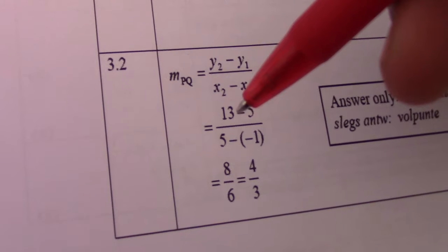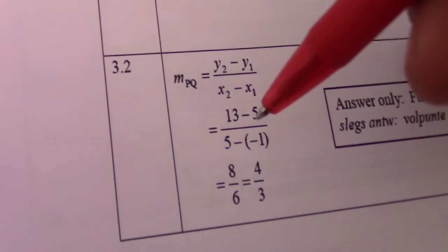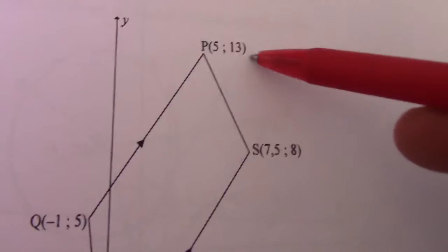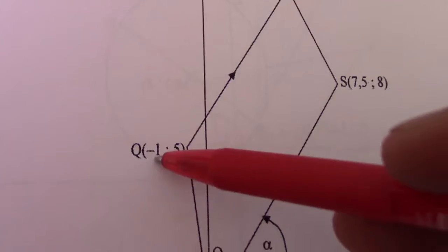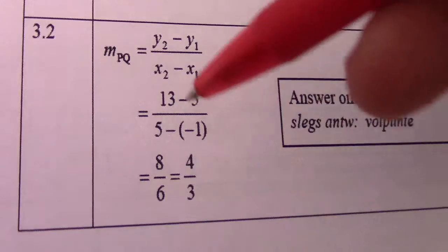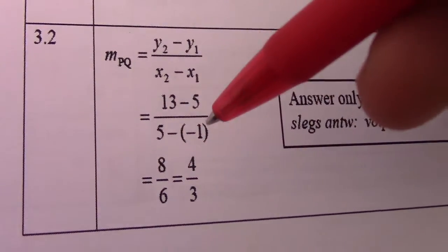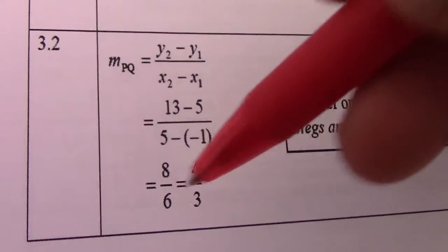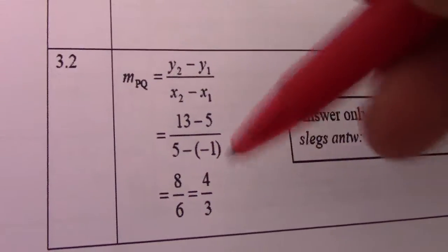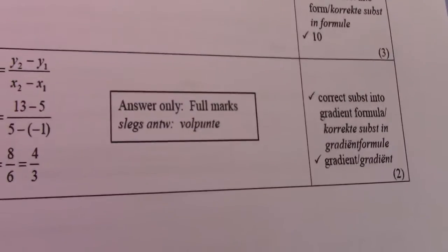So there's my coordinates for P: 13 and 5. Here's my coordinates for Q: -5 and -1. So there you see 5 and 13, -1 and 5. That gives me 8/6. 13 minus 5 is 8, 5 minus -1 is 6. 2 goes into 8 four times, 2 goes into 6 three times, leaving 4/3. I hope you follow and understand.